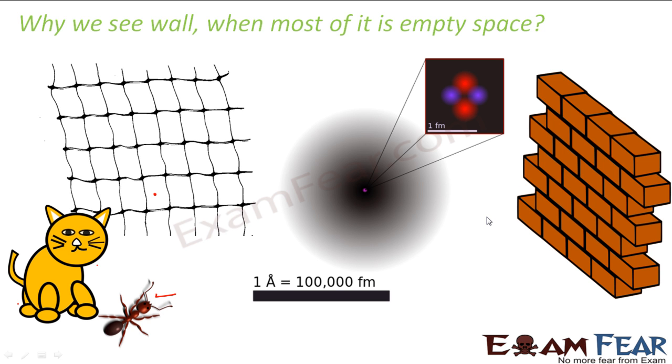Similarly, when we talk about this wall, which is made up of a huge number of atoms, which is nothing but empty space. But since the number of atoms are huge and also the ray which is being used to make it visible, for example, we are able to view objects or our visibility is because of the light rays, because of the visible light.